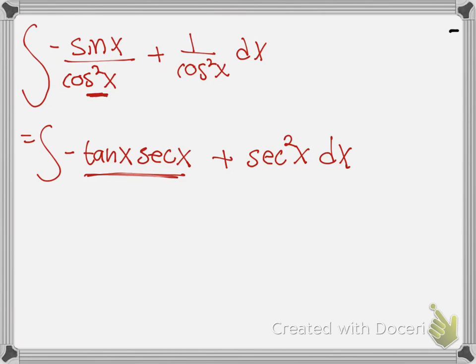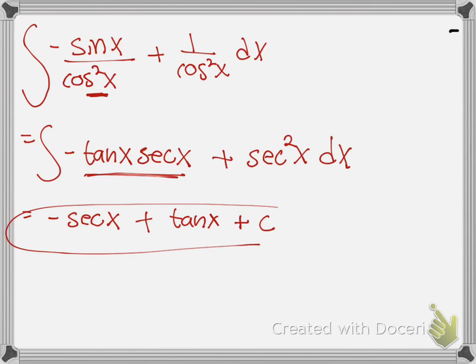The antiderivative of tangent times secant — which is the same as secant times tangent — is secant of x, because the derivative of secant is secant tangent. And the integral of secant squared is tangent of x, because the derivative of tangent is secant squared. So the final answer is negative secant of x plus tangent of x, plus c.